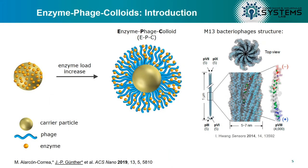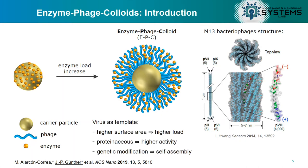First I would like to present our idea of an enzyme-phage colloid, which combines a carrier particle with bacteriophages. Those are very long viruses with a very high aspect ratio. We bind enzymes to the phages. Compared to a conventional approach, this largely increases the surface area available for modification and therefore increases the enzyme load. Additionally, enzymes feel very well on proteinaceous surfaces like bacteriophages and therefore show higher activity.